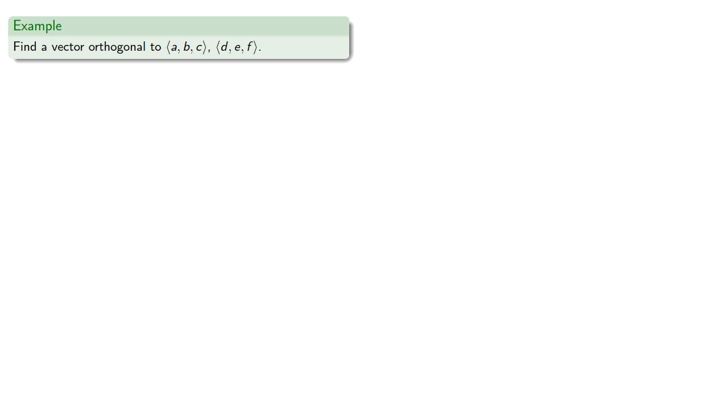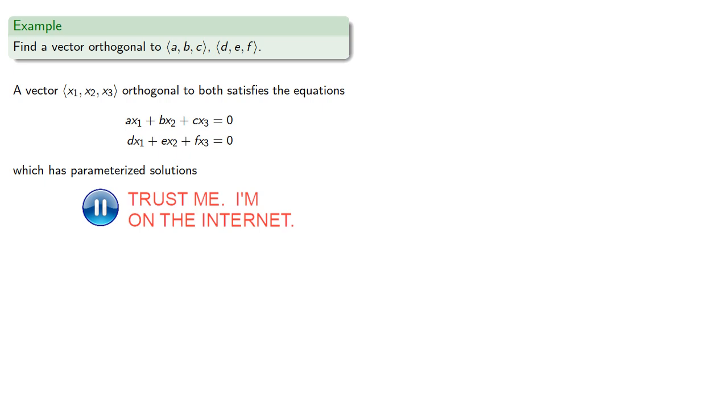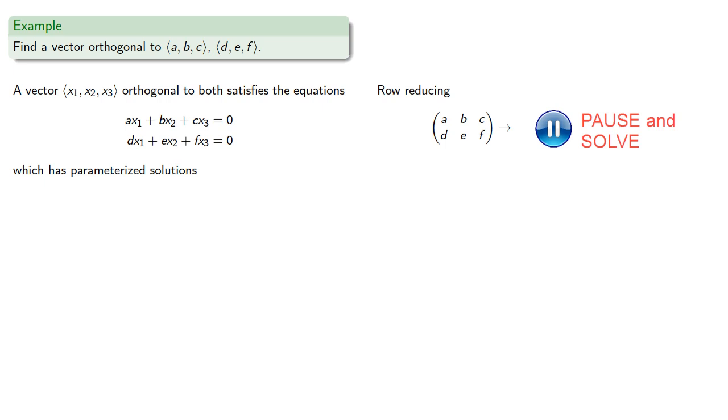So a vector orthogonal to both satisfies the system of linear equations. We'll row reduce and get our parameterized solution. Since our pivots are dA and aE - dB, it will be convenient to include a factor of dA times (aE - dB) in our parameterized variable. So we'll let x3 be—